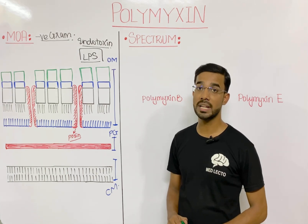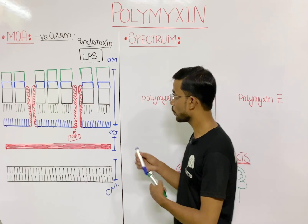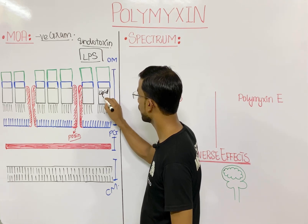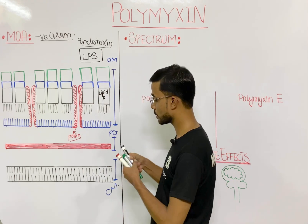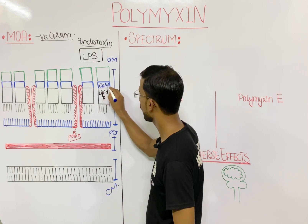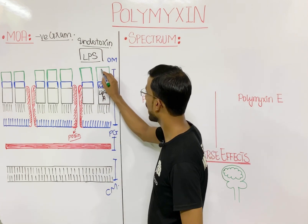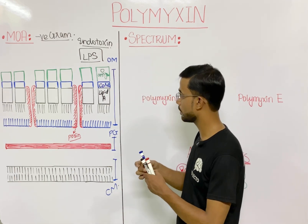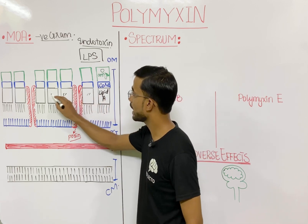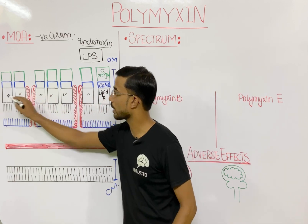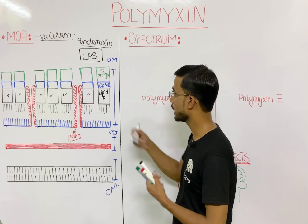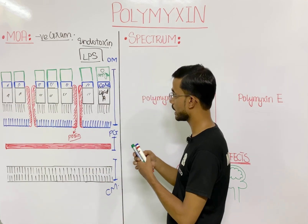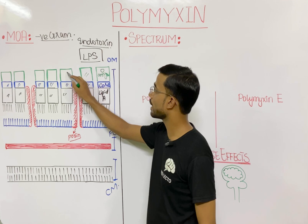Lipopolysaccharide, or endotoxin, has three most important components. The first component is the lipid A. The next component is the core polysaccharide, and the last component is the O antigen, also known as the somatic antigen.